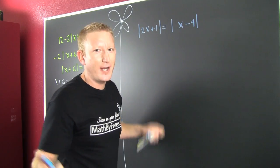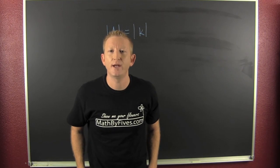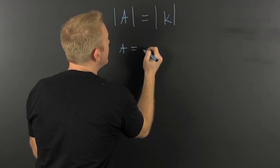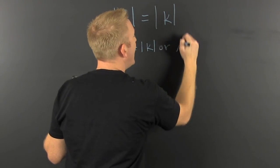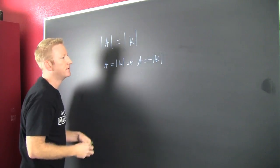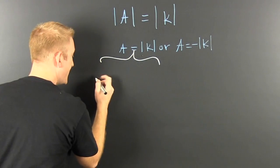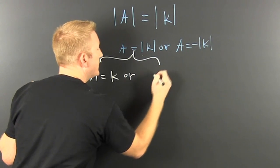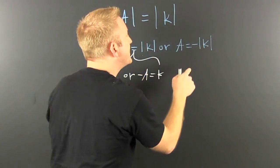Next, we have to see what absolute value on absolute value action is. So we take the outer absolute value and break it up into its two cases: a equals the absolute value of k, or a equals minus the absolute value of k. Then we take each and break those up further into two cases: a equals k, or k equals the opposite of a.